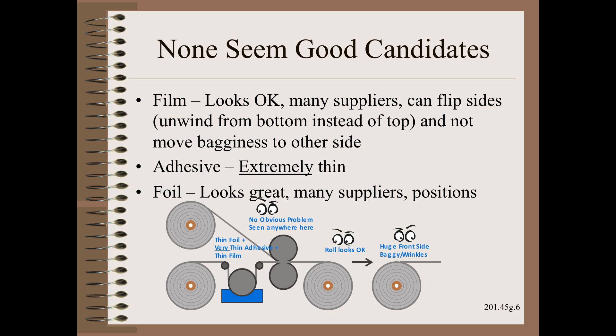The adhesive is extremely thin — only a couple percent of the total laminate thickness. From prior experience in many industries, it takes one to ten percent variations in total thickness to cause troubles, so the math doesn't seem to work out to be enough. Finally, it is difficult to hide poor foil because it is easy to see imperfections in the shiny surface. Also, foil from many suppliers and many positions all seem to have similar response: perpetual troubles on the front side.